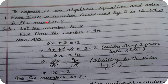The question is: what is that number? We'll say let the number be x. Then five times the number will be 5x. According to the question, five times the number increased by 2 is 12, so the equation is 5x + 2 = 12. This equation is called an algebraic equation.